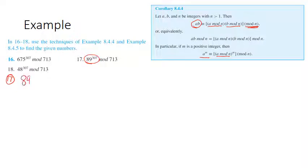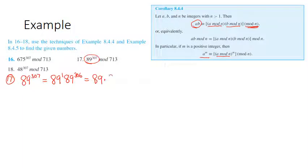I'm going to start with 89 to the 307 and break this exponent up. This is going to be 89 to the 1 times 89 to the 306. I want to get an even exponent, so this is 89 times 89 squared to the 153, because 2 times 153 is 306 — just using rules of exponents. Now I can actually go ahead and square 89 to get 7,921.